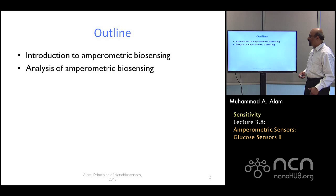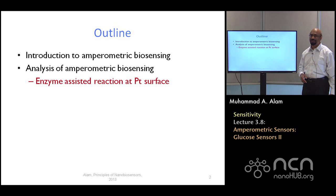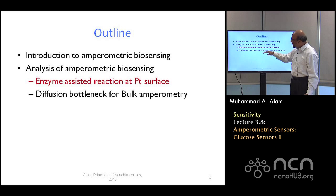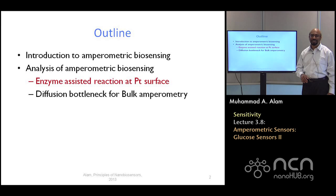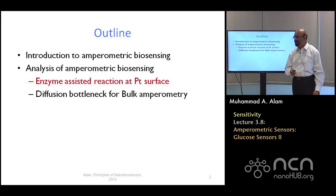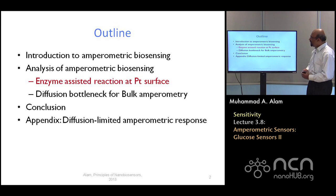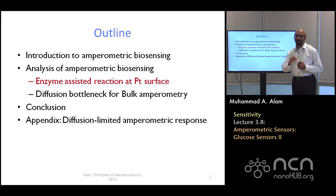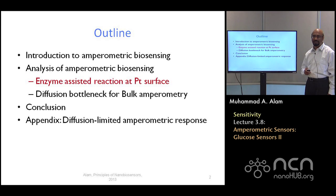I will briefly give you an analysis of the enzyme-assisted reaction on the platinum surface, because that gave us the selectivity. It's a very important point of glucose sensors that allows very selective detection of biomolecules. We'll also come back to the diffusion-limited response, and then conclude. There will be a big formula for the diffusion bottleneck, but since we discussed it in detail in lectures 4 through 12, I will just summarize the results. The derivation will be in the appendix.